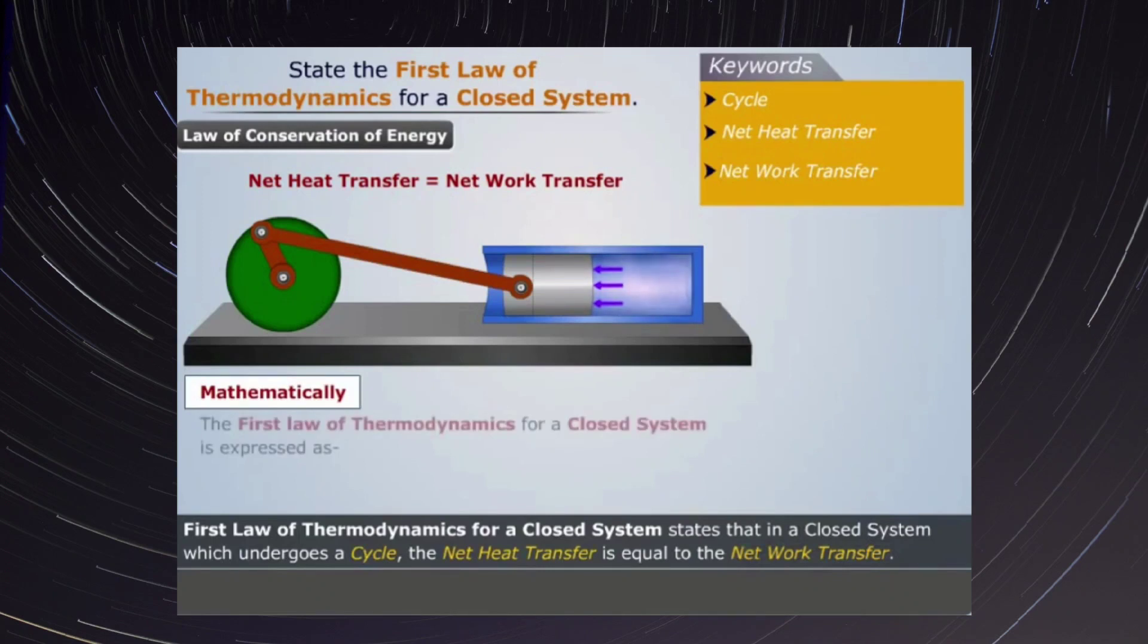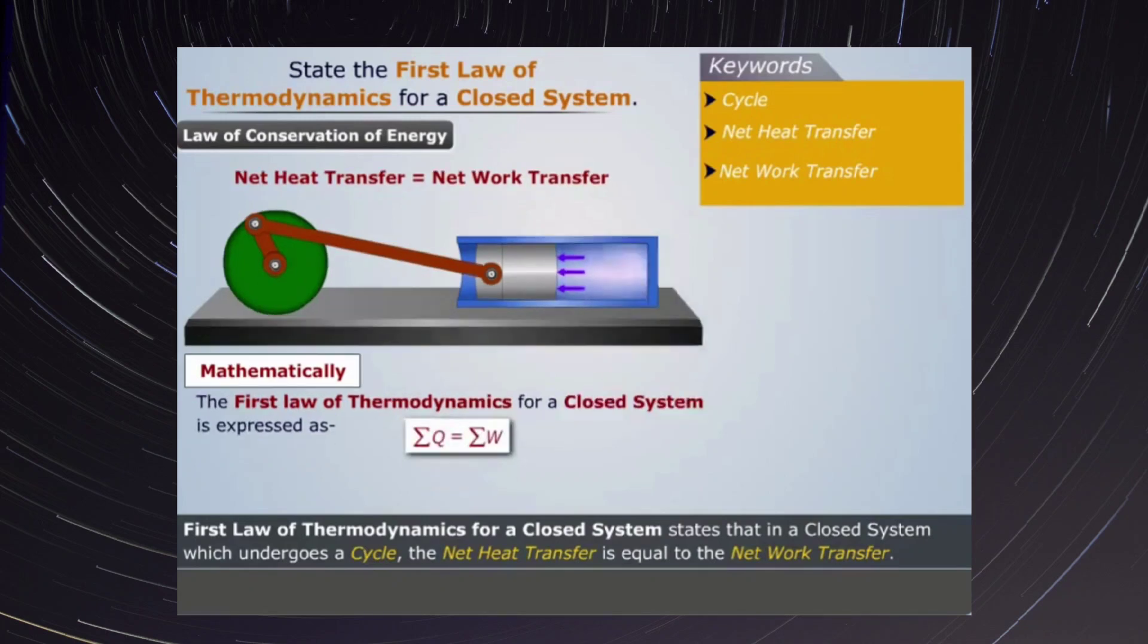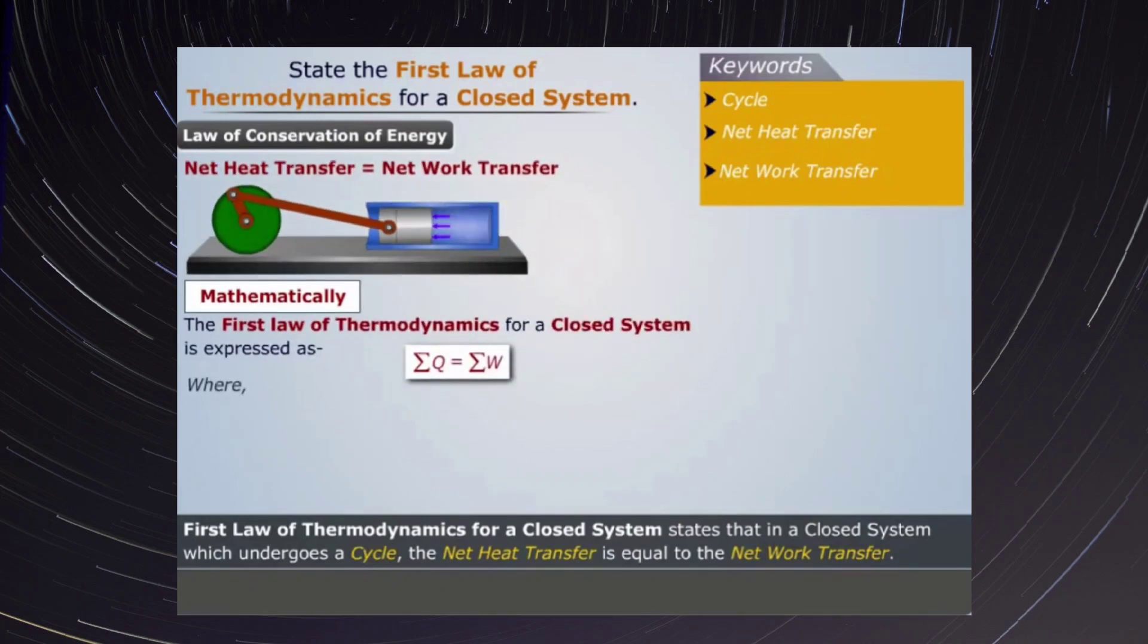Mathematically, the first law of thermodynamics for a closed system is expressed as: where Sigma Q is the net heat transfer to the system, and Sigma W is the net work transfer to the system.